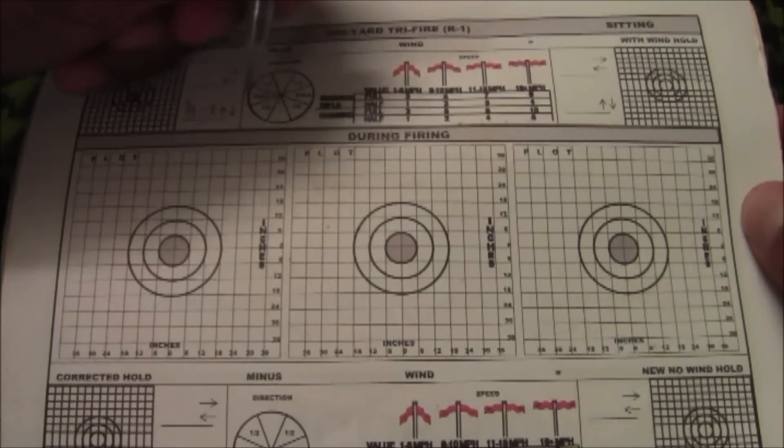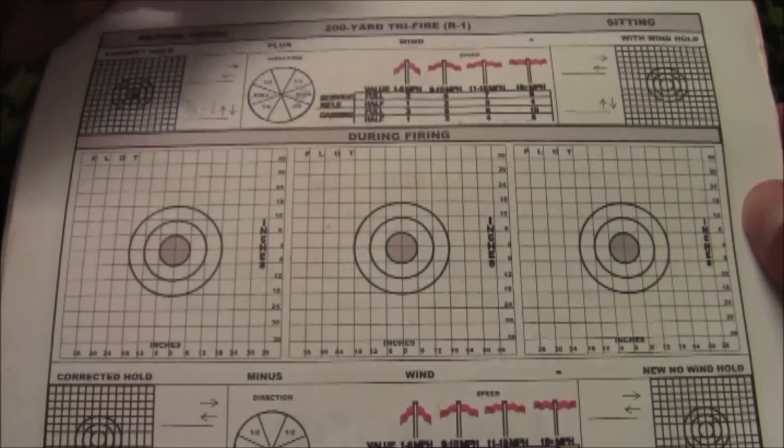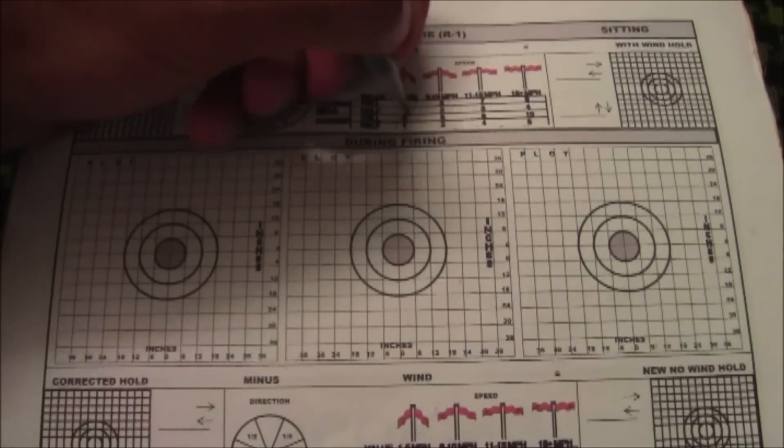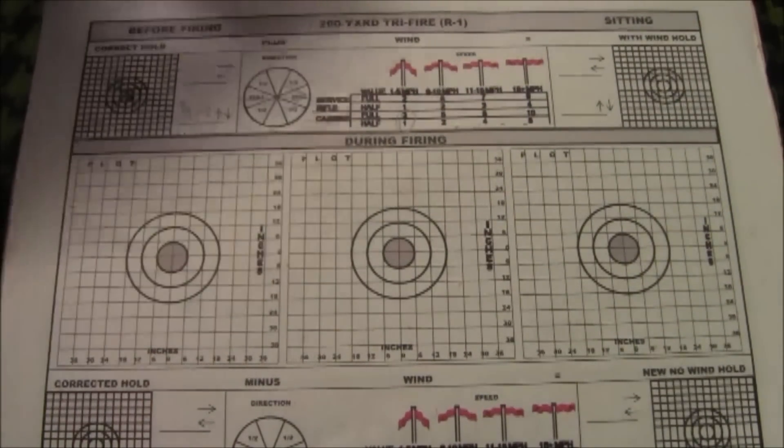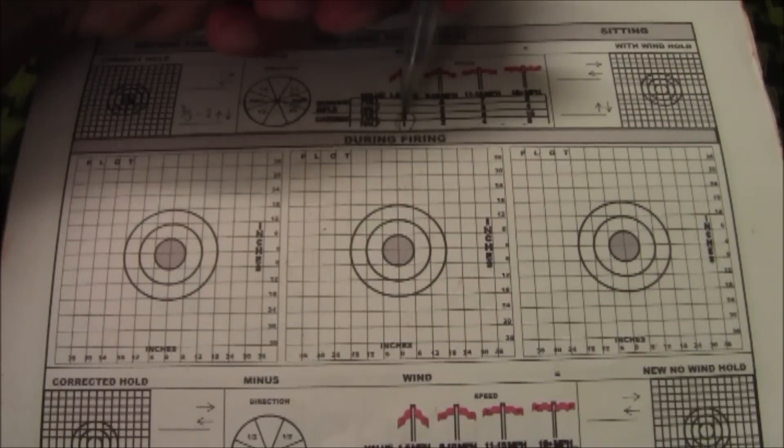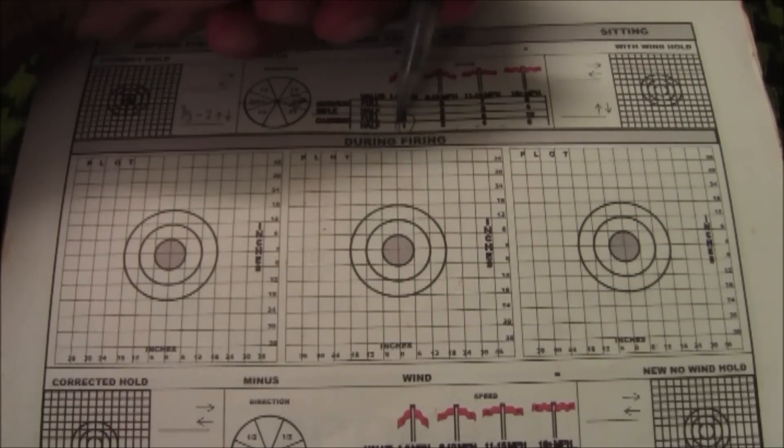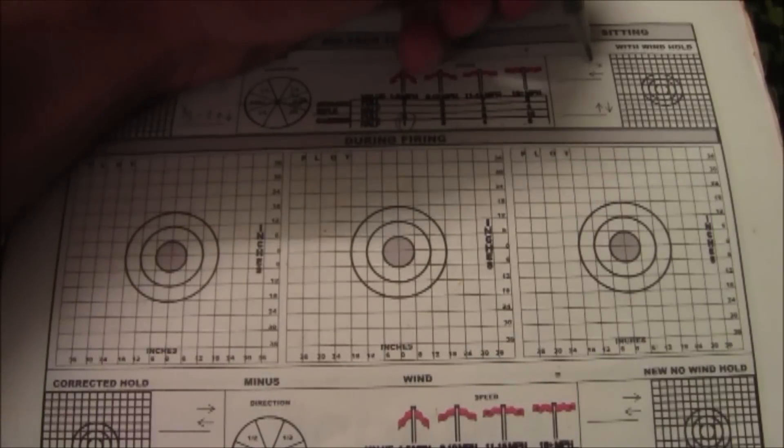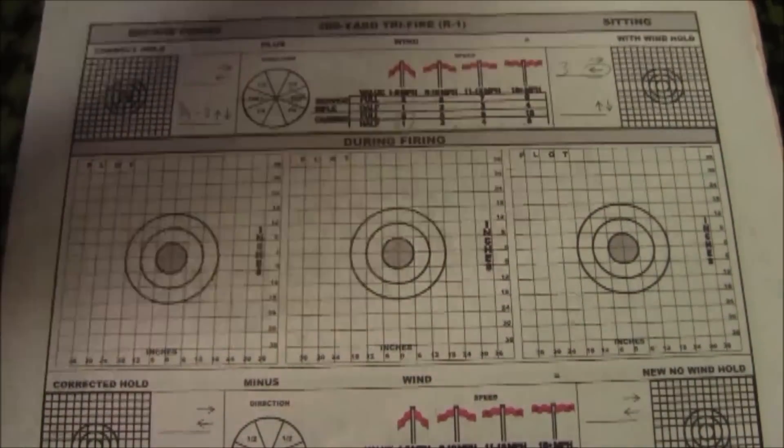Then you go over your wind, so let's say I have left to right full value, I estimate it to be 1-5 miles an hour and I'm using a carbine, I'm using an M4. So then these are in inches right here, it shows you how many inches you need to hold in that direction, so I'd hold left 3 inches we'll call it for full value wind. So left, 3 inches.